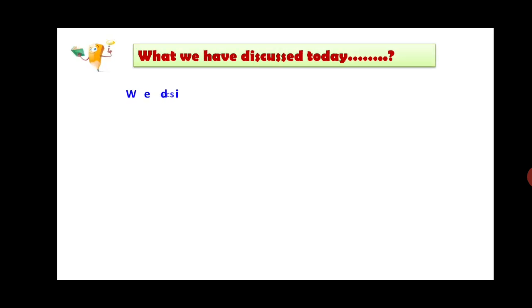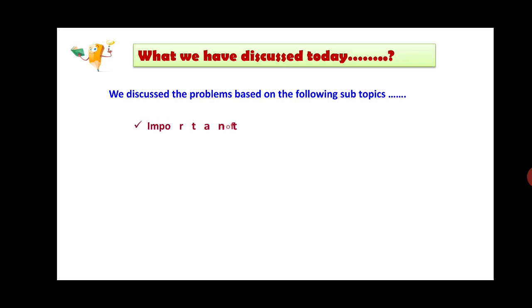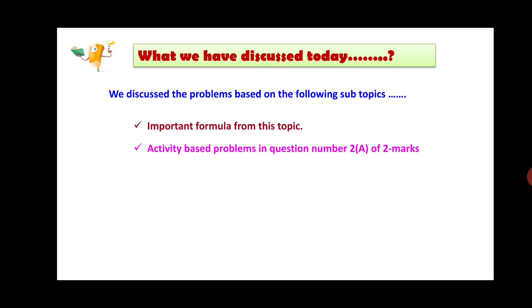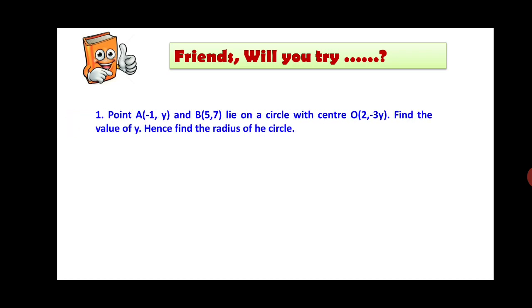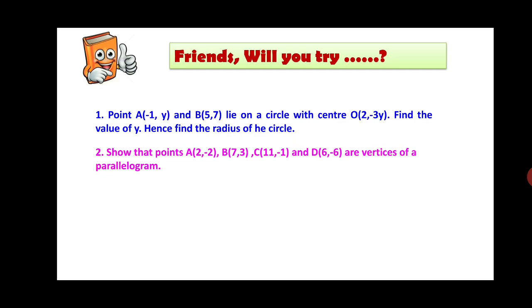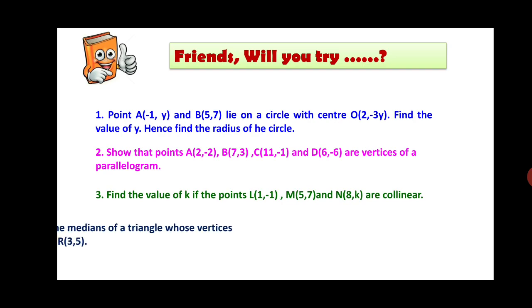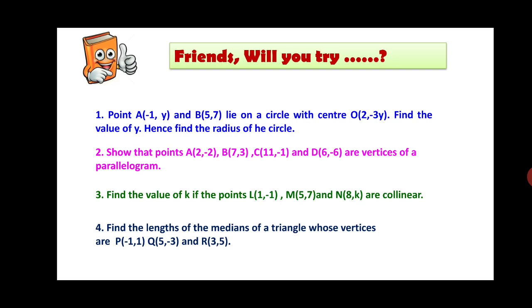So friends, what we discussed today: important formulas from this topic, activity-based problems for 2 marks (question 2A), activity-based problems for 3 marks (question 3), and problems from question number 4 and 5. You may prepare parallel examples and try the following practice problems: Point A(-1, y) and B(5, 7) lie on a circle with center O(2, -3y) — find the value of y and hence find the radius of the circle. Show that points A(2, -2), B(7, 3), C(11, -1), and D(6, -6) are vertices of a parallelogram. Find the value of k if points L(1, -1), M(5, 7), and N(8, k) are collinear. Find the length of the medians of a triangle with vertices P(-1, 1), Q(5, -3), and R(3, 5).